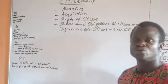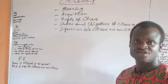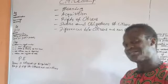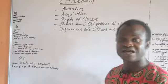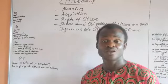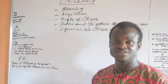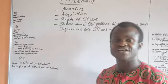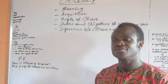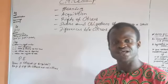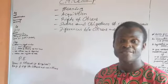Number two, you have citizenship by marriage or registration. If you marry into a particular country, or you are married to an individual from that country, that qualifies you to be a citizen of that country. It is called citizenship by marriage or citizenship by registration.